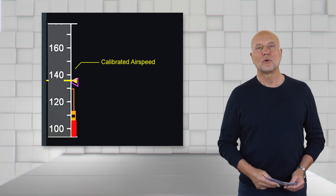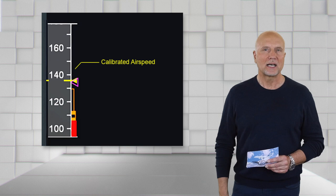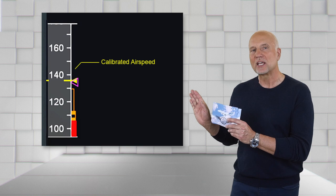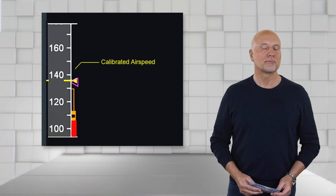The yellow triangle with the yellow line is the calibrated airspeed. Now I would like to talk about speed indications which are presented via the amber and red bar next to the speed scale. They are part of the flight envelope protection system.